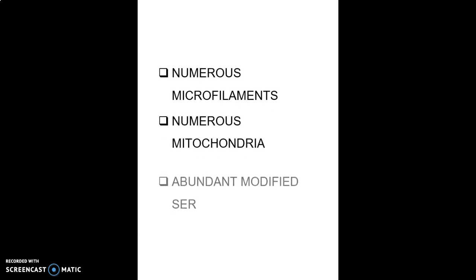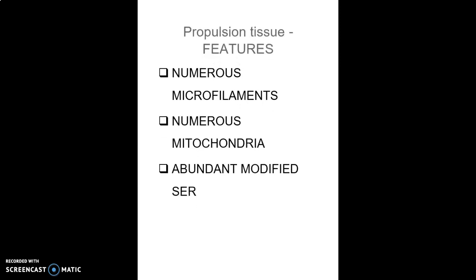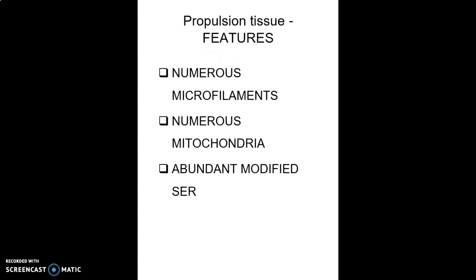Contractile or propulsion cells have numerous microfilaments and mitochondria as well as smooth endoplasmic reticulum.